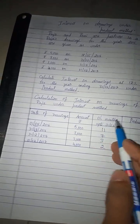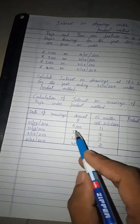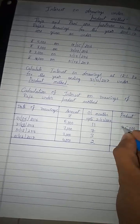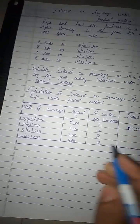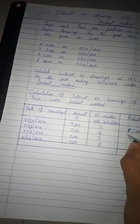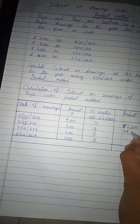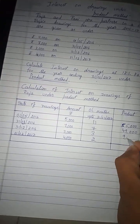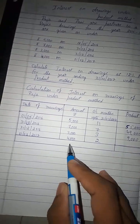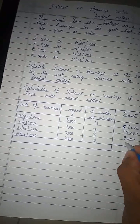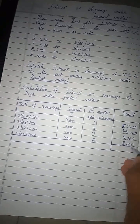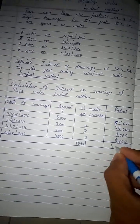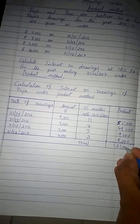Now we calculate the products. Amount multiplied by outstanding months: 5,000 × 11 = 55,000; 7,000 × 7 = 49,000; 3,000 × 3 = 9,000; 4,000 × 2 = 8,000. The total product is 1,21,000.